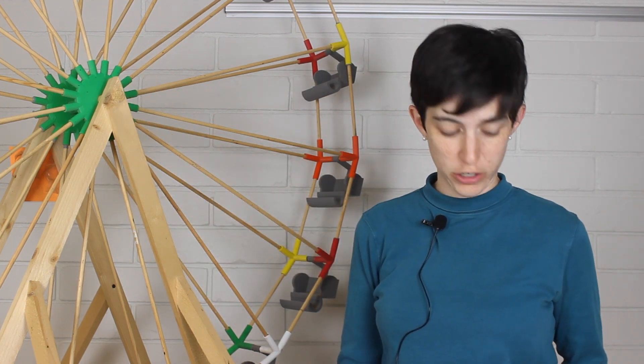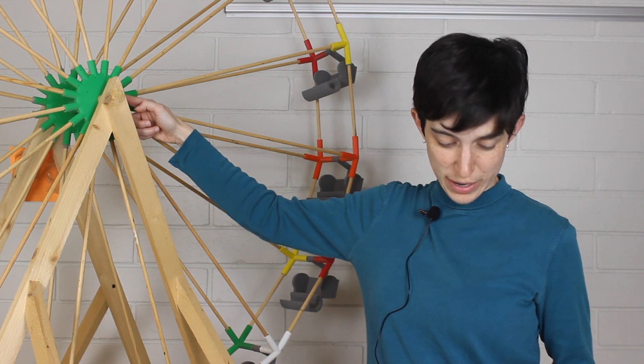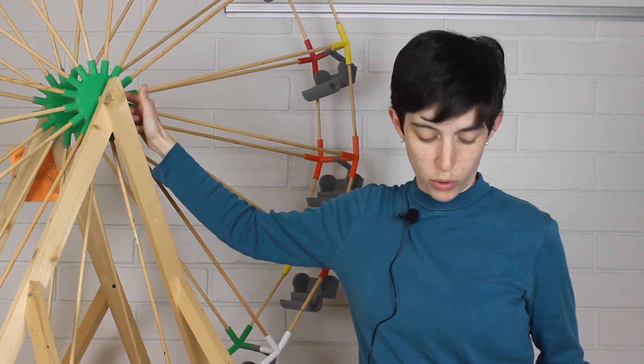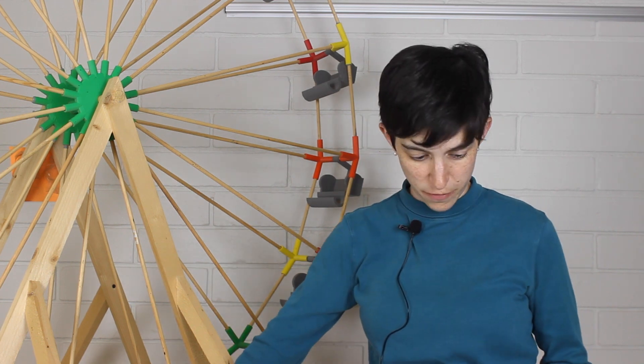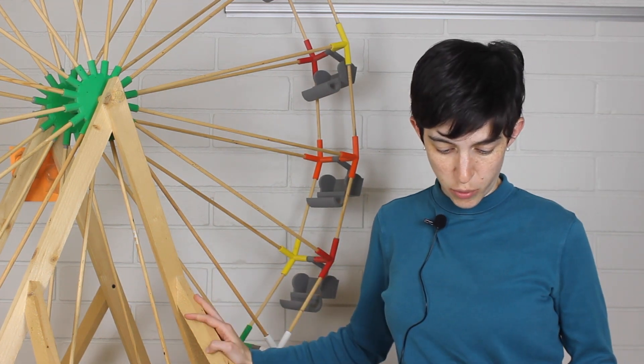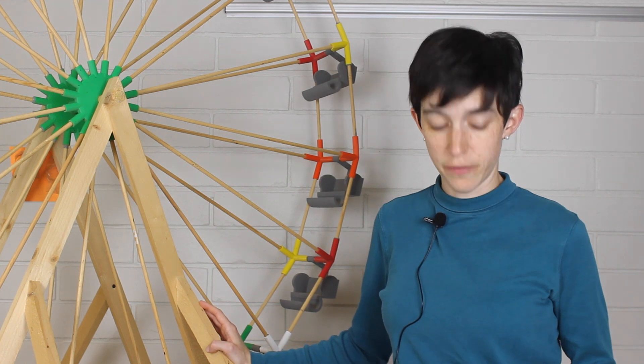In a traditional Ferris wheel, the axle, which is right here, is the true workhorse. It must sustain the full weight of the wheel and keep it suspended above ground. The axle is typically supported by two towers on either side of the wheel.